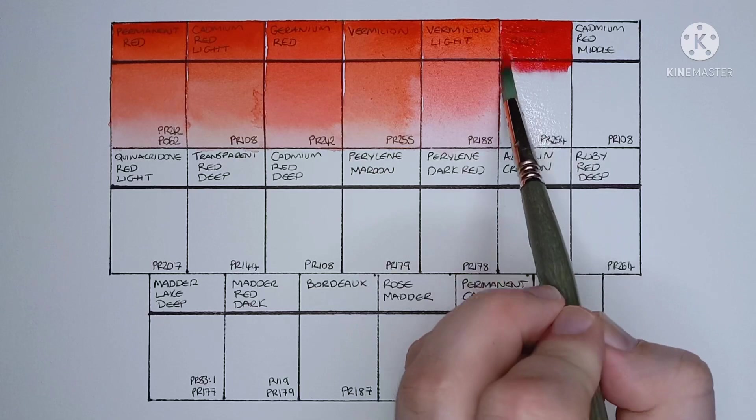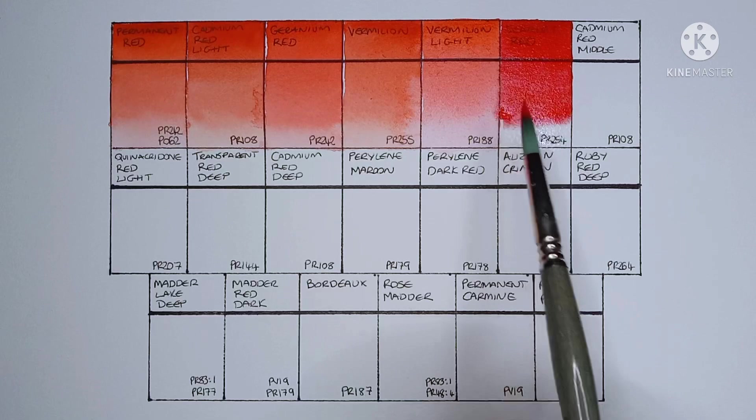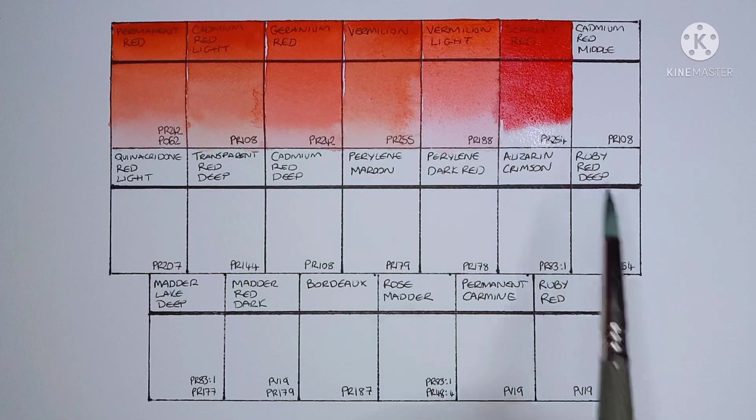And next we have scarlet red, and this one's PR254. This one looks really nice. It's a lot more vibrant and saturated, and you can also see it flows on the wet paper.